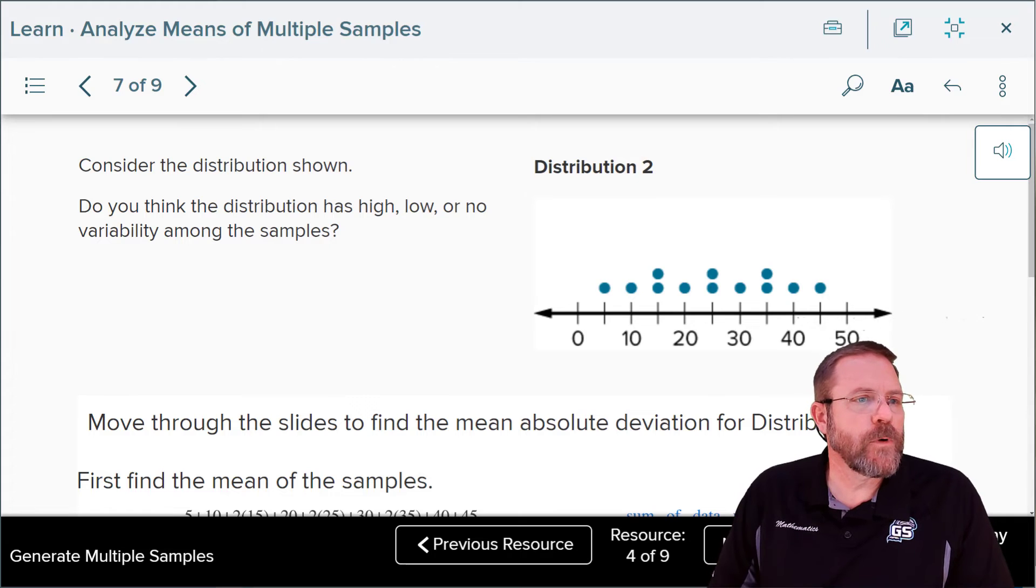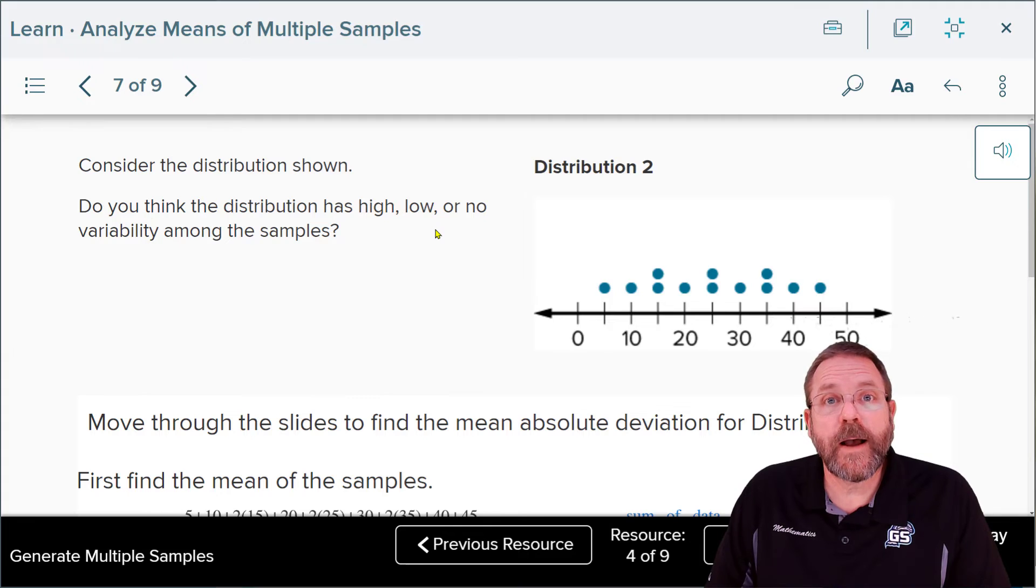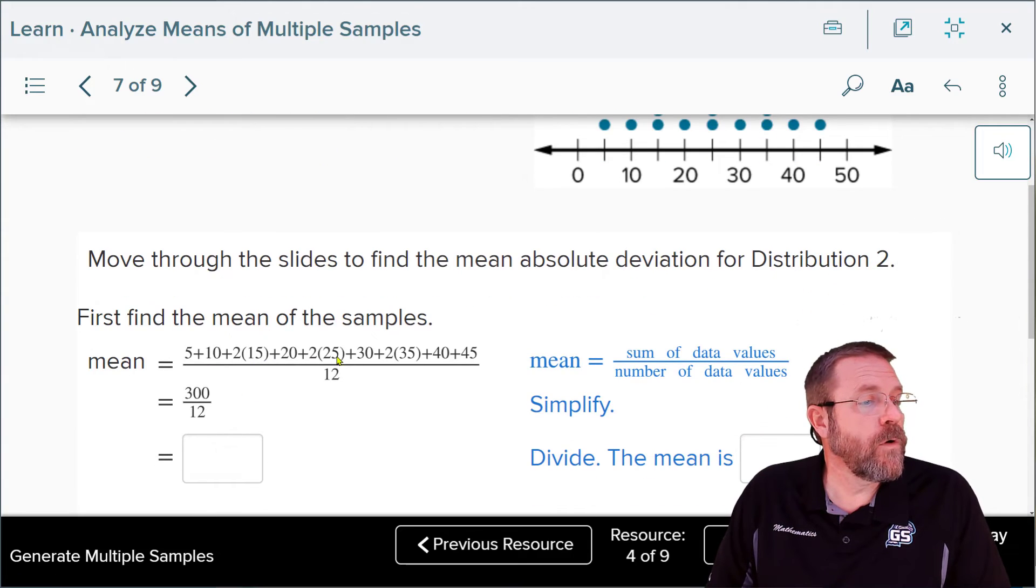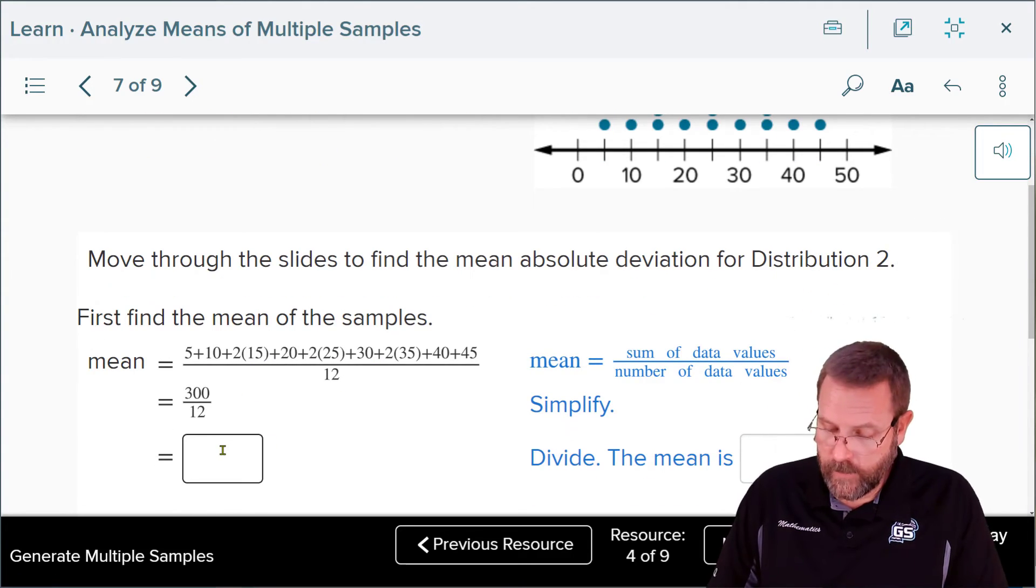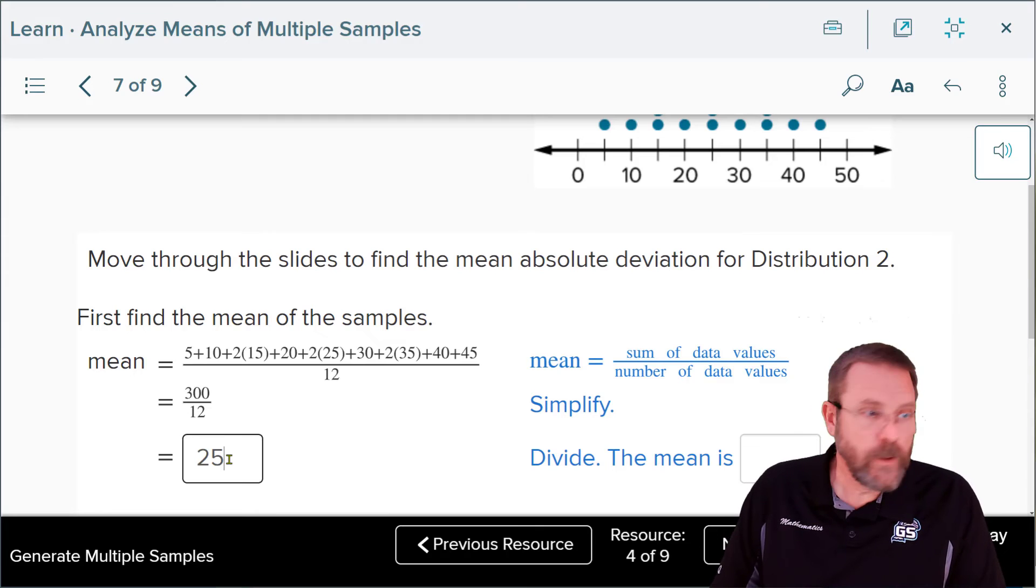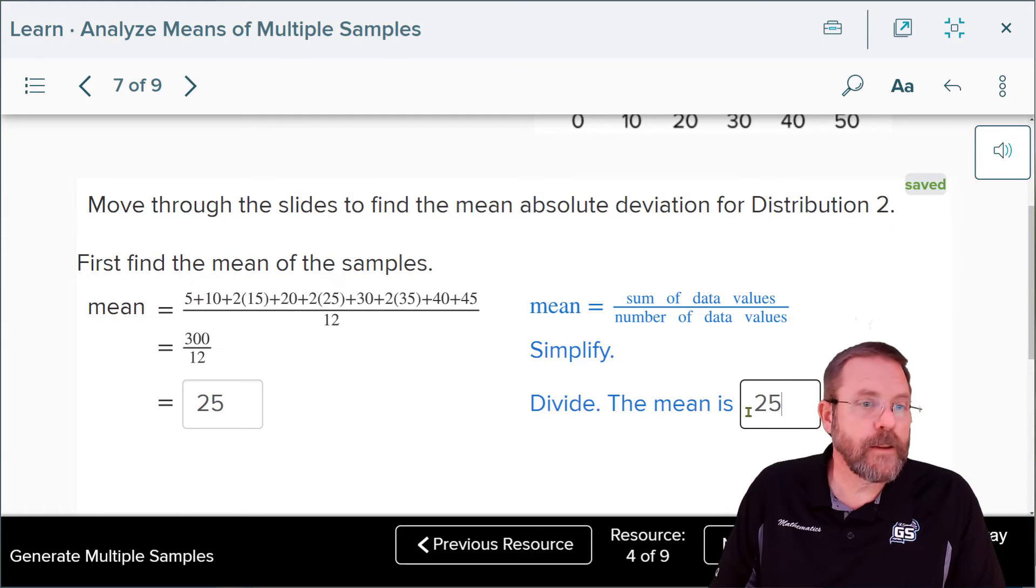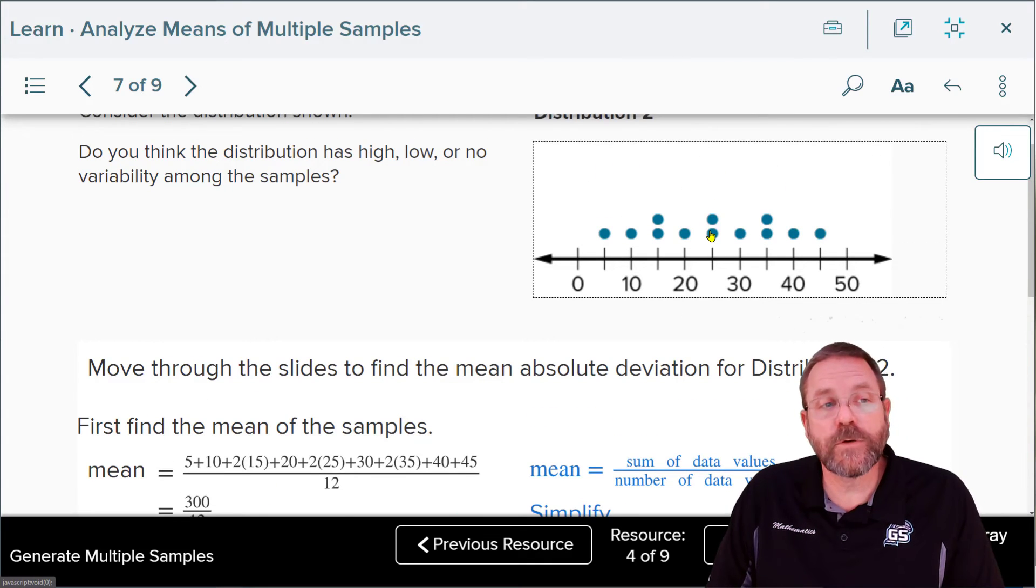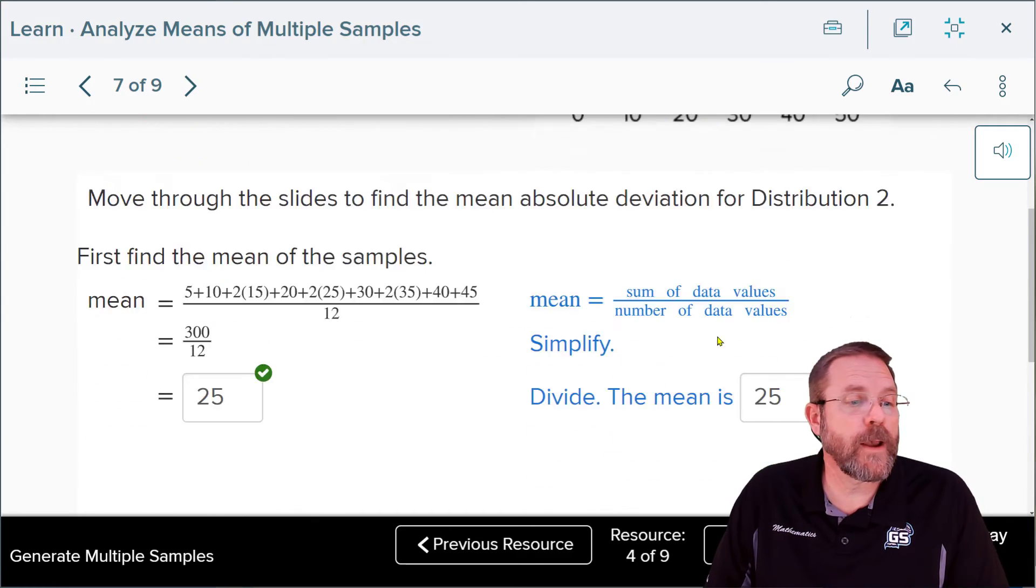Now let's look at the distribution of this data set. We're going to call this distribution 2. Do you think this is going to have a high, low, or no variability among the samples? I'm thinking that's a pretty high variability because you go all the way from 5 up to 45. Nothing's really dominant in here. That's pretty high variability here. And if you added all those numbers up, 300 divided by 12 ends up giving you 25. So that means that the mean of that data is also 25. And 25 is located right here on our graph, which happens in this case to be the very middle of the graph.